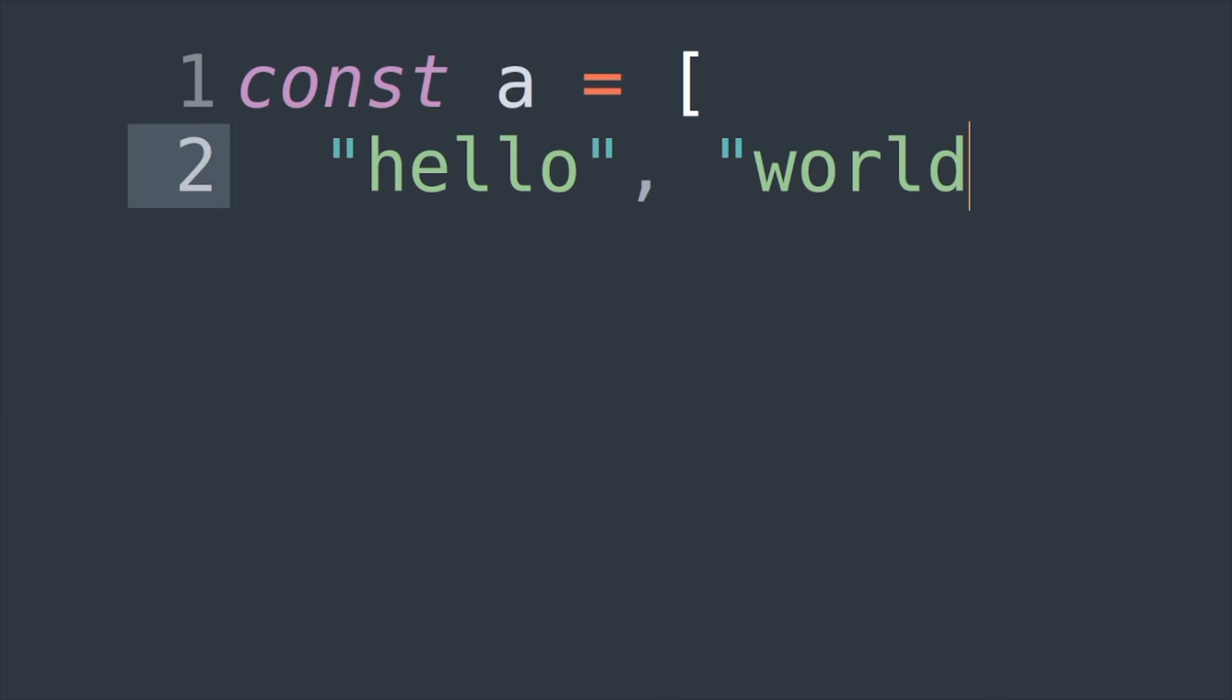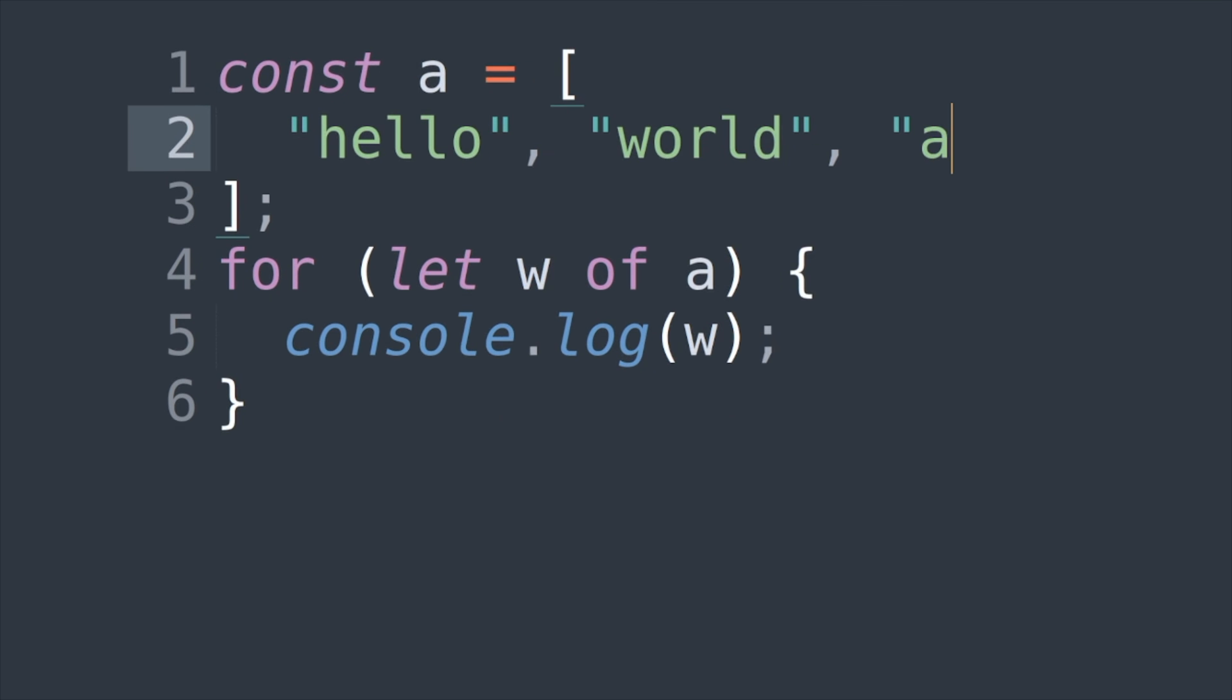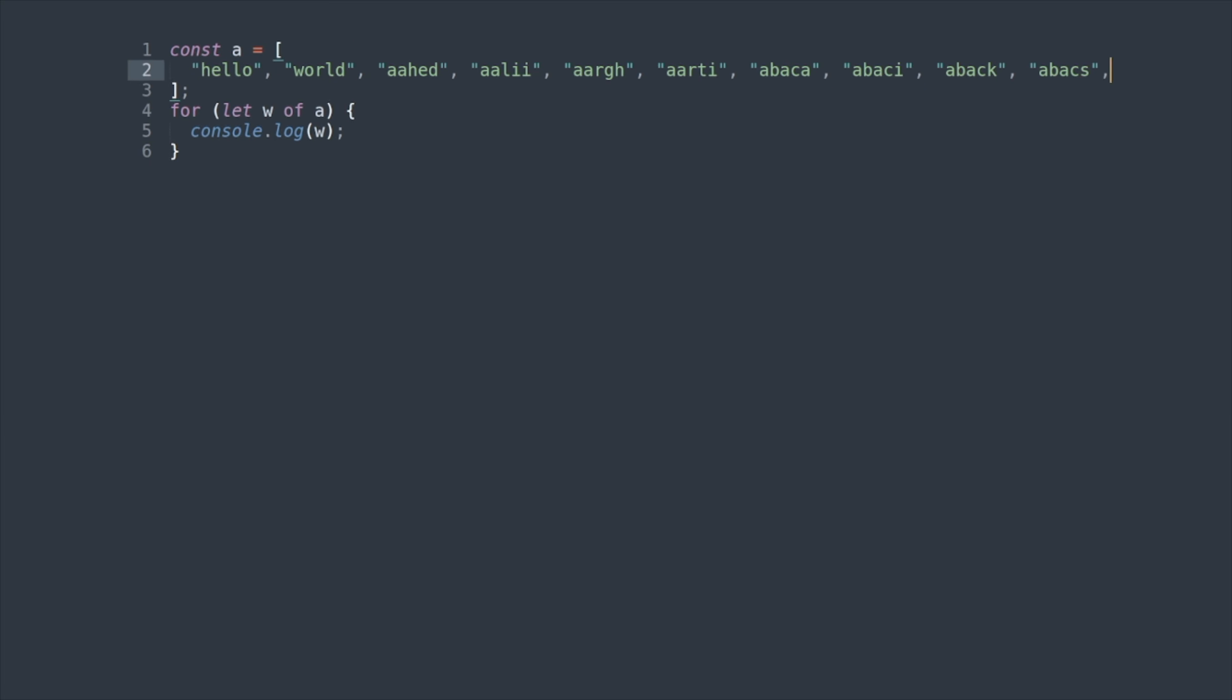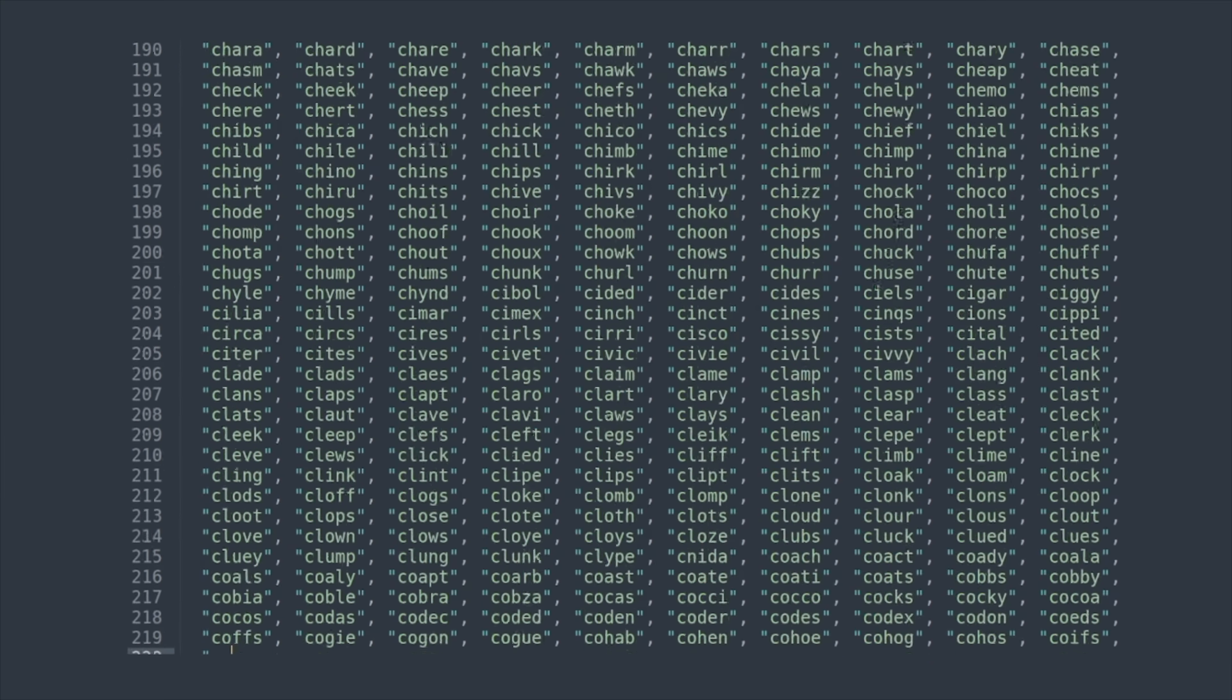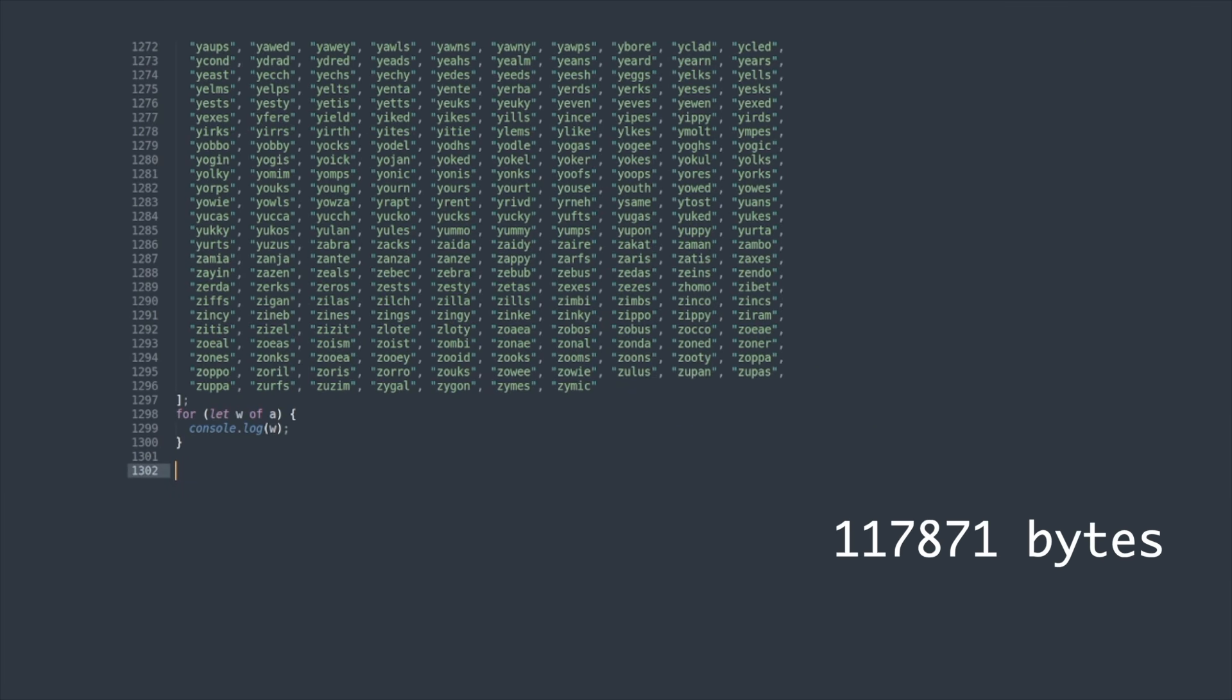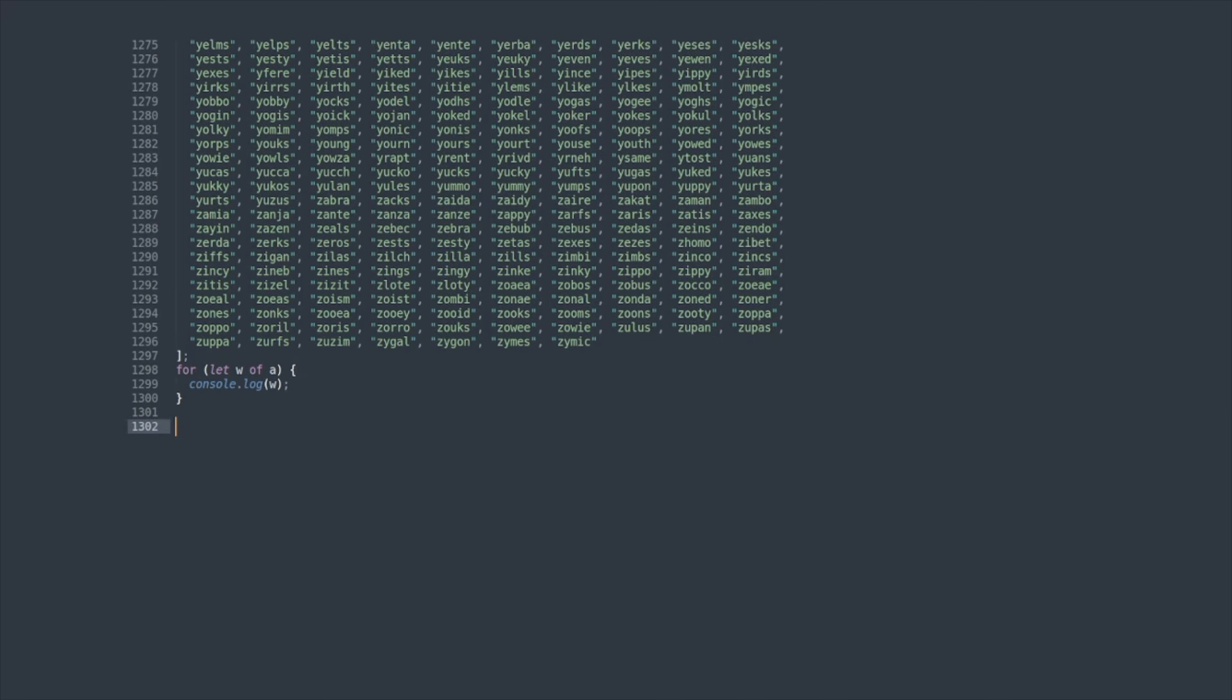What's the smallest JavaScript program you can write that prints out exactly the set of five-letter words that are allowed as guesses in the puzzle game Wordle? Here's one such program. It puts all the words into a big array and then prints them in a for loop.